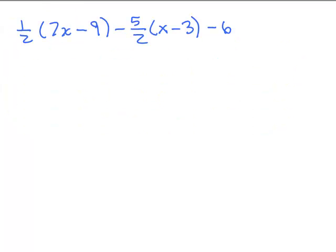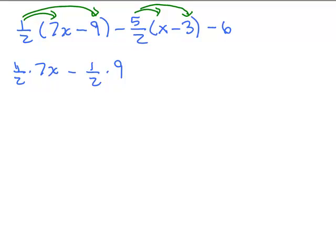Let's do one more. Here's one for you to try — put the video on pause and try it. We have to distribute. Don't worry about the fractions. So we have to distribute the 1/2 to everything in the first parentheses. So we have 1/2 times 7x, minus 1/2 times 9. You could put plus 1/2 times negative 9, but basically there's still just going to be 1/2 times negative 9. And then we need to distribute the negative 5/2 to the next parentheses. So remember, it's a minus 5/2. So we have negative 5/2 times x. Now what's going to happen when you do a negative 5/2 times a negative 3? That's going to change to a plus — negative times negative — and we have 5/2 times 3. And then we have this minus 6 hanging out on the end.